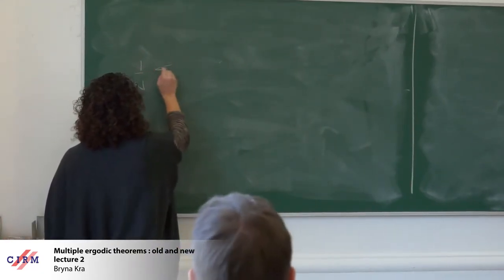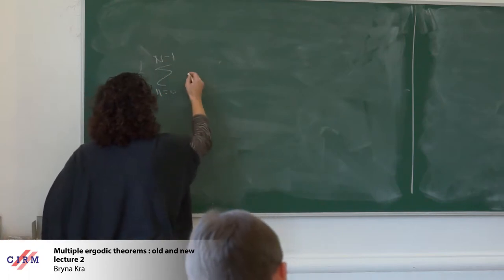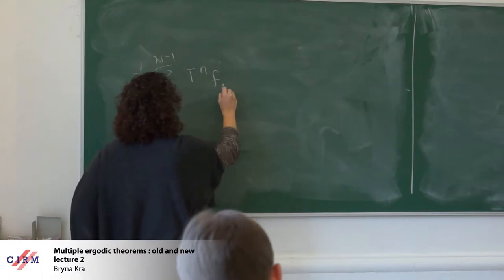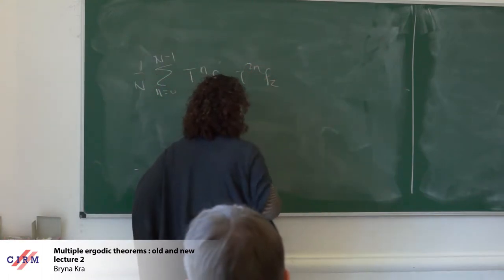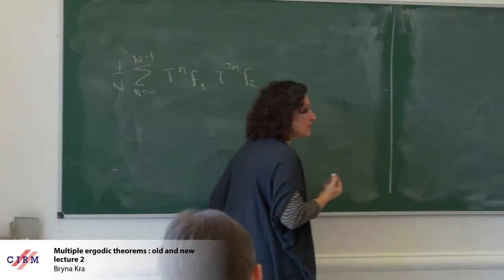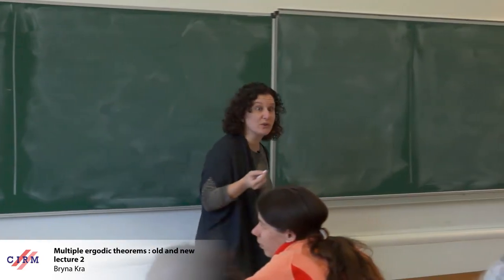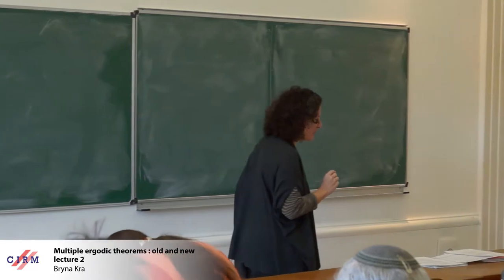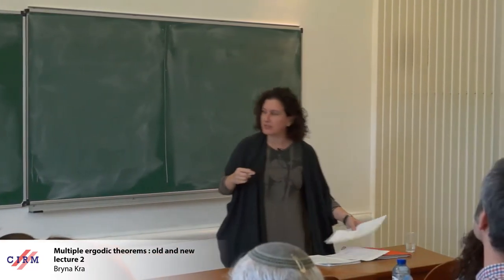For this, we will look at the following average: T to the n times f1, T to the 2n times f2. It turns out that the structure that's important for this average is exactly the Kronecker factor that was introduced. The point of view will be a little bit different than what was discussed in the previous talk.